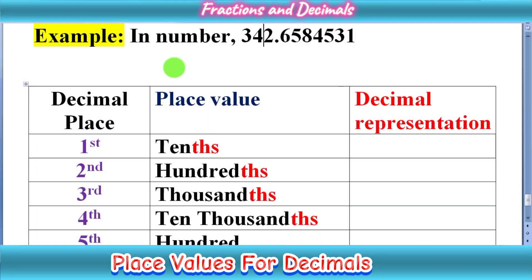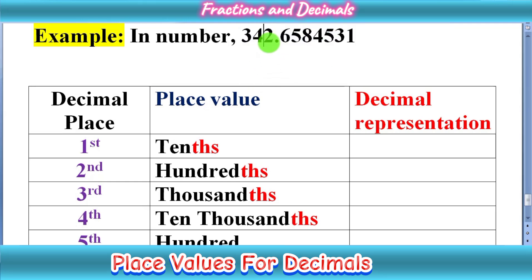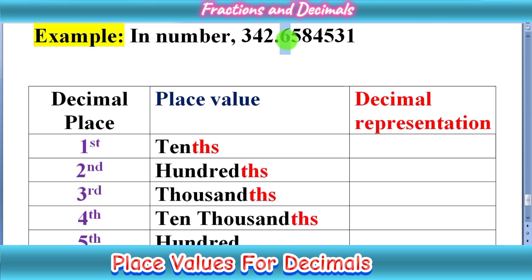As you can see the table here for the number 342.6584531, we have different place values. As you know that in whole numbers we have ones place, tens place, and so on — thousands, ten thousands, hundred thousands. Similarly, after the decimal point we have some places. The first number after the decimal point is at the first decimal place, and 5 is at the second decimal place. Similarly, 8 is at the third place, 4 at the fourth place, and 5 at the sixth place.